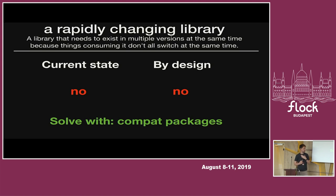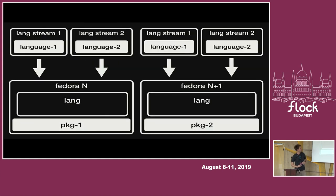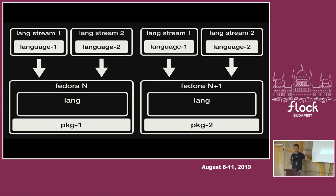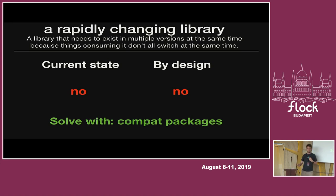Modularity doesn't address parallel installation because modularity deals with alternatives. If I have language one or language two, I want them to behave the same — I want the same executable on the system, I just want to choose the version. I don't want to change the packages in a way that installs them somewhere else, like with software collections or other mechanisms. So whenever I don't want to change the package and want to have multiple alternatives, modularity could be the good solution. But when I need other hacks, it basically doesn't help.